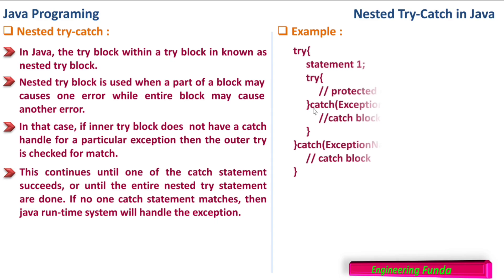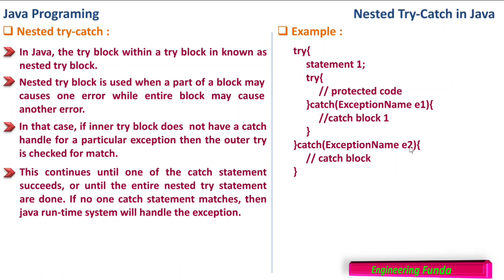Here is an example of nested try. We have an outer try with statement one, then an inner try block with protected code and a catch block for exception name E1. The outer try is closed and has its own catch block for exception name E2. I hope this is clear, my dear friends. Thank you for watching this video. Stay tuned for more videos on Java programming.